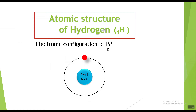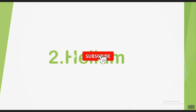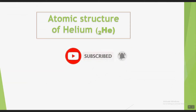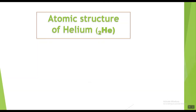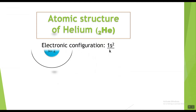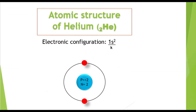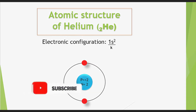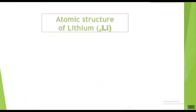Now helium. The symbol for helium is He with atomic number 2, showing it has two electrons. The electronic configuration of helium is 1s2, showing it has two electrons in the K shell. This is the atomic structure of helium: it has two protons and two neutrons in the nucleus, and two electrons around the nucleus in the K shell.